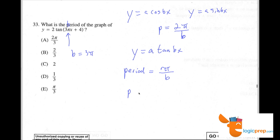And so we're going to take the period p and divide it by 3 pi, which makes 1 third.